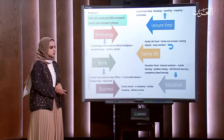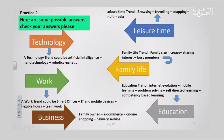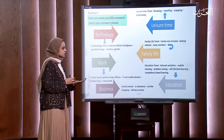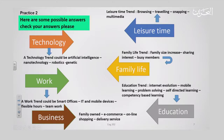As you see here, some of the possible answers: in work, we might work later using flexible hours. We might work with mobile devices and also be working in smart offices. How about family life? Family trends can be like the family size might increase, sharing interests among family members. Whereas in education, we might see internet evolution, mobile learning, problem solving, self-directed learning, and competency-based learning.